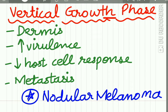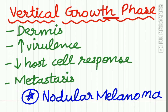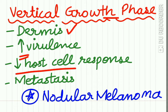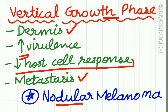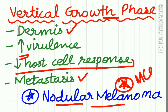In the vertical growth phase, the neoplastic cells invade the basement membrane and accumulate in the dermis. There is increased virulence in the neoplastic cells, the host cell response is reduced, and metastasis has been reported. Importantly, nodular melanoma has only the vertical growth phase — remember this as an MCQ point.